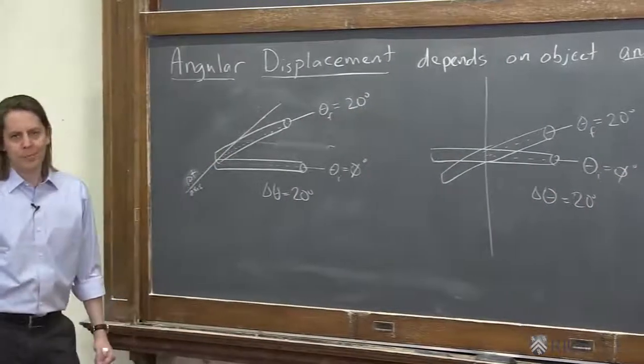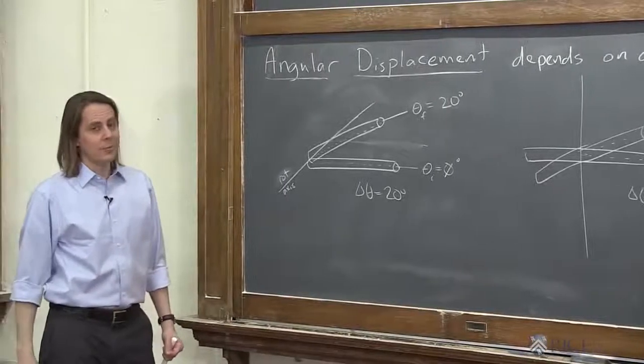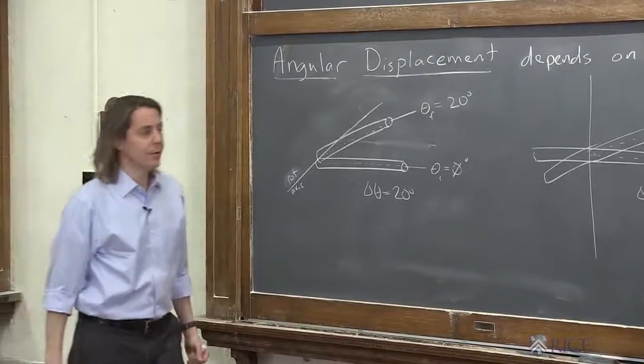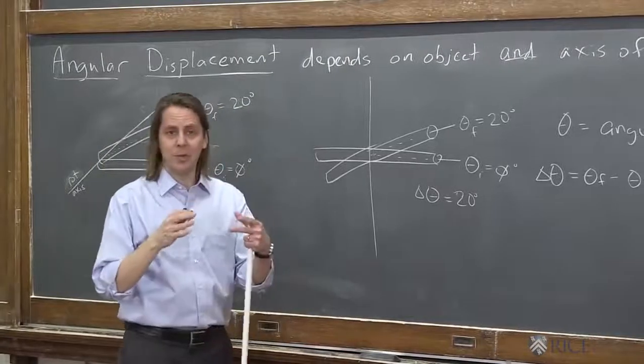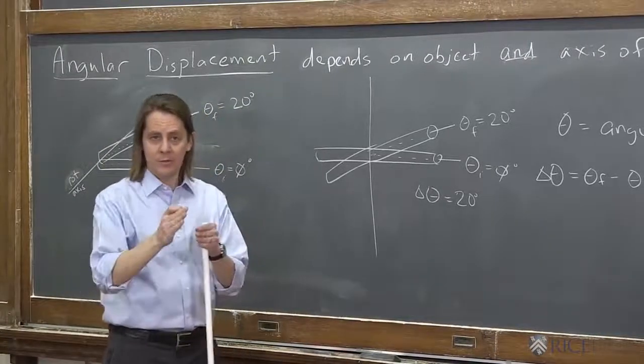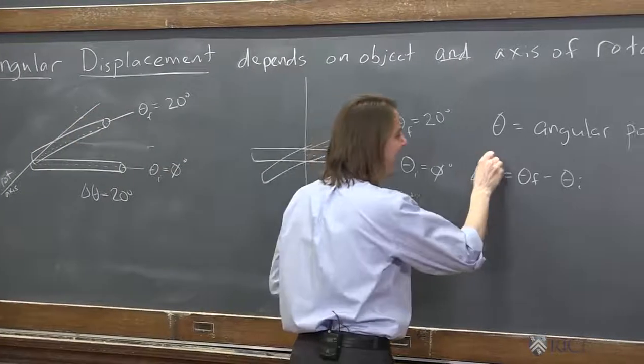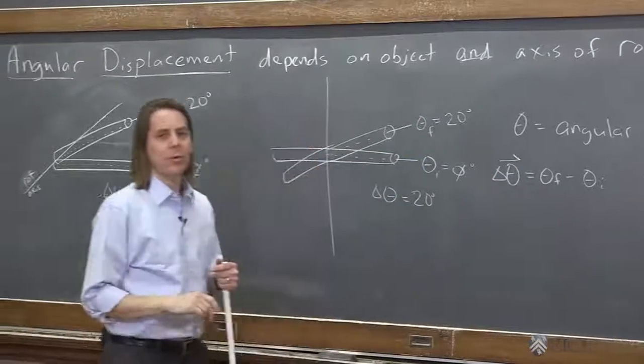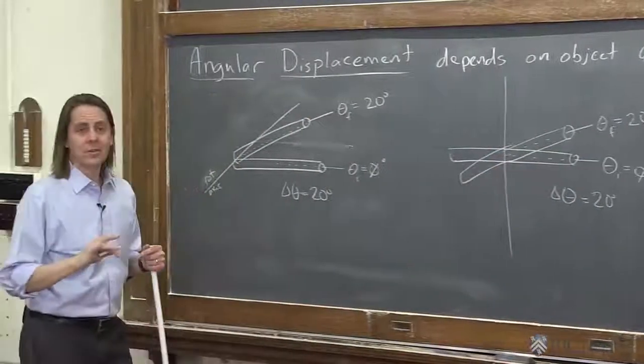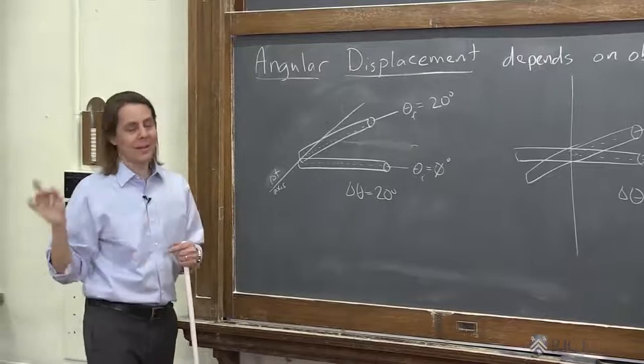There's one more thing. The angular displacement is a vector. Remember how the translational displacement, delta x, was always a vector, because it's in a direction along the x-axis. Angular coordinates are also vectors. The direction is the tricky part.